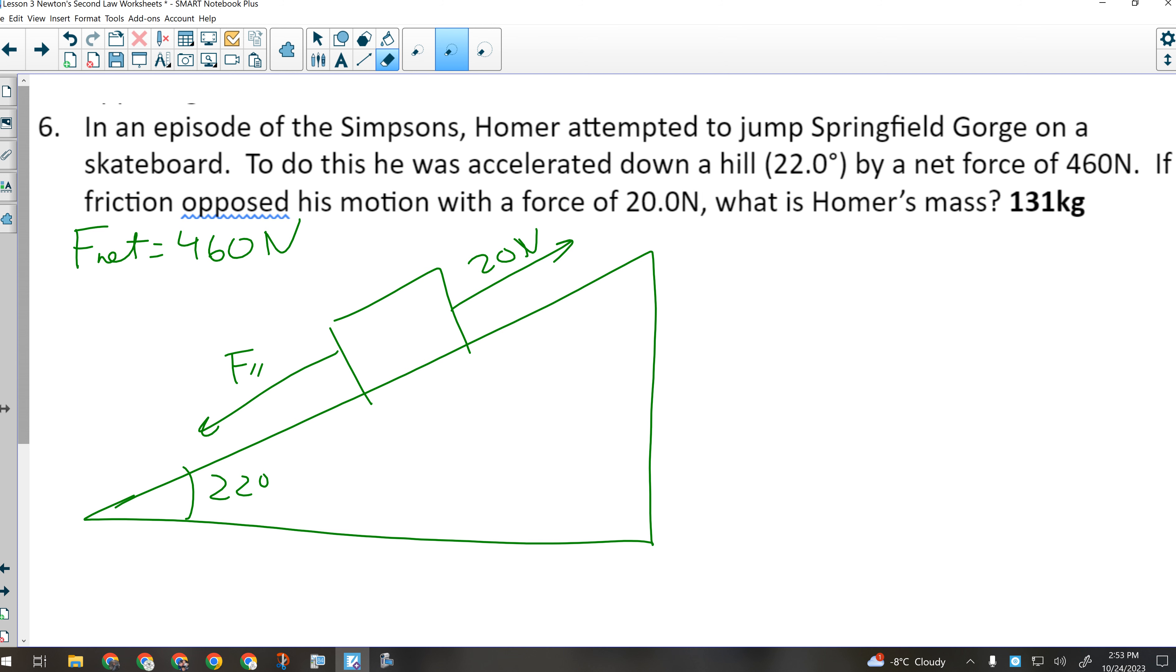Yes, I can. So, I'm going to solve for F parallel right now using the vector sum of all forces. F net is going to be F parallel plus the force of friction, so that's going to be F net minus the force of friction equals F parallel. Now, if you thought that Homer may have lost a few pounds on the way down, this is probably where you made your mistake. If you were off by just a tiny bit, this is probably where you made your mistake. I'm going to make down the hill positive, so 460 Newtons, minus negative 20, because friction is up the ramp,